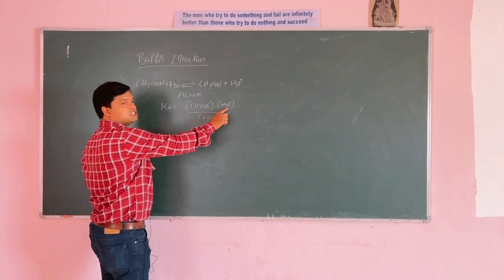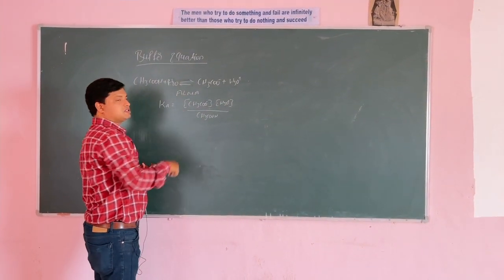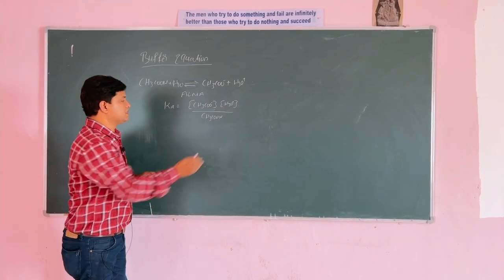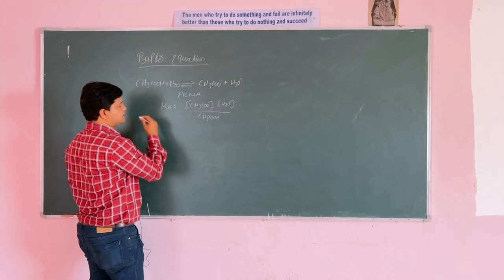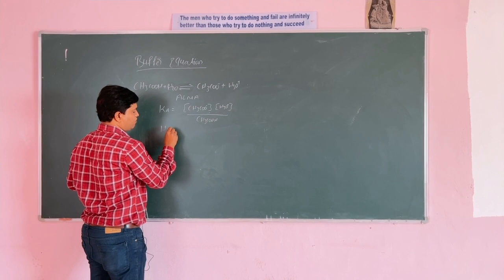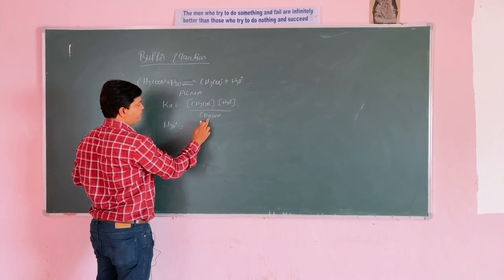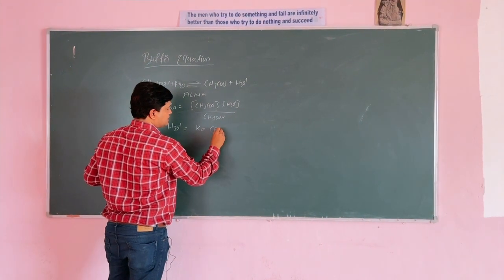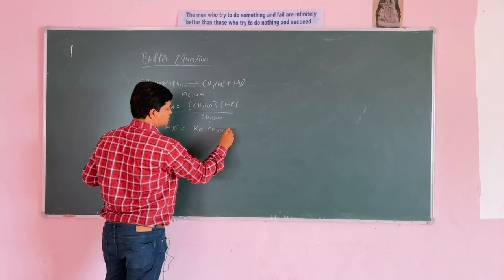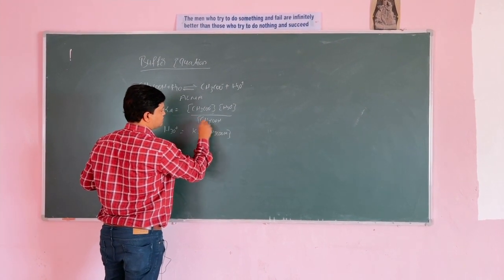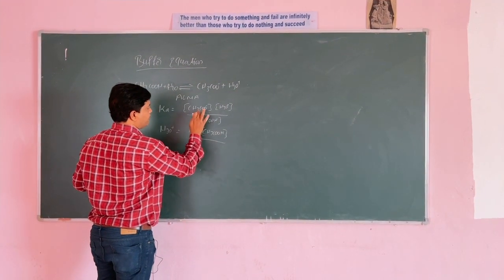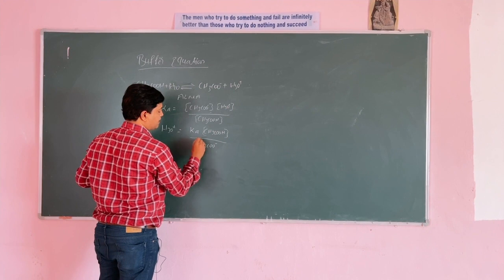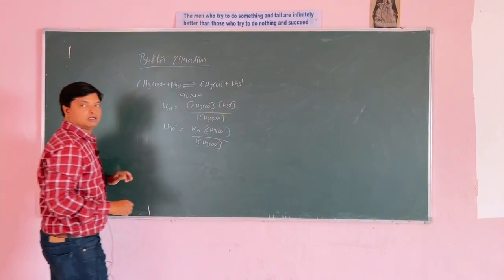Now solve the equation for H3O plus. Rearranging, H3O plus is equal to Ka multiplied by the concentration of CH3COOH divided by the concentration of CH3COO minus.